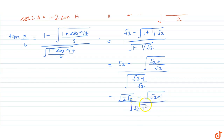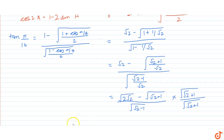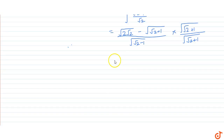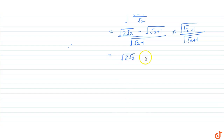Now multiply and divide by the square root of (root 2 plus 1). Solving this equation we get the square root of 2 root 2 multiplied by the square root of (root 2 minus 1), minus the square root of (2 root 2 plus 1) whole squared.